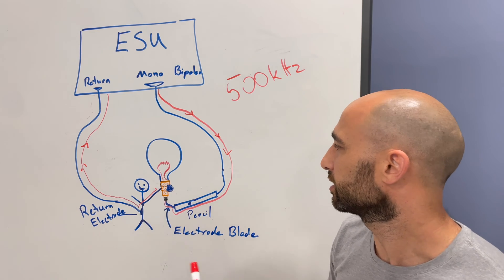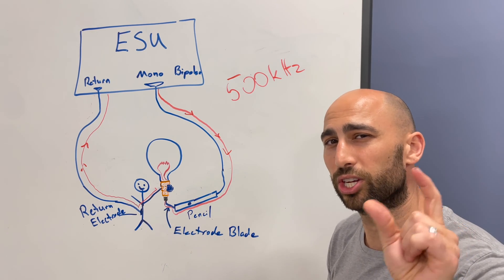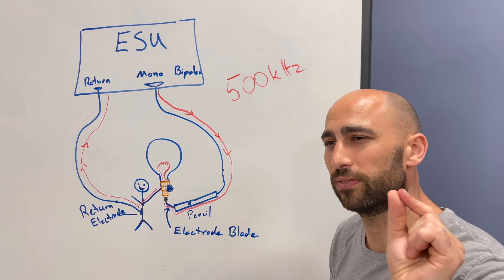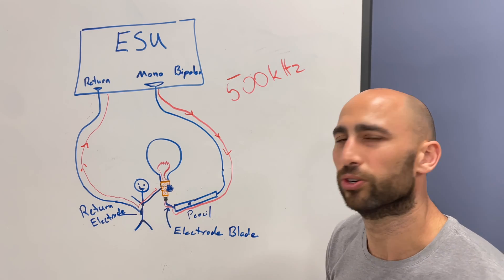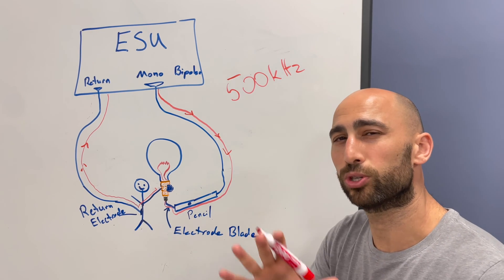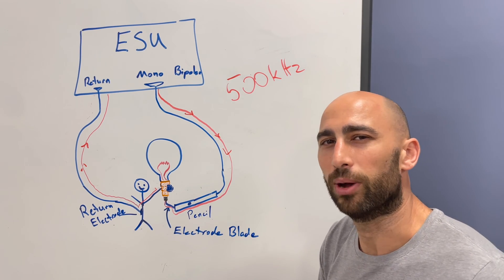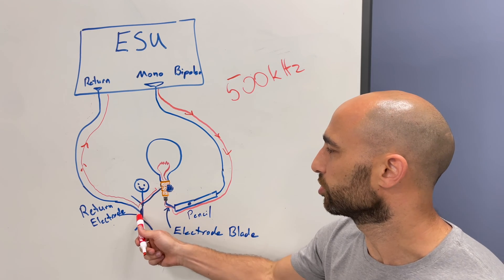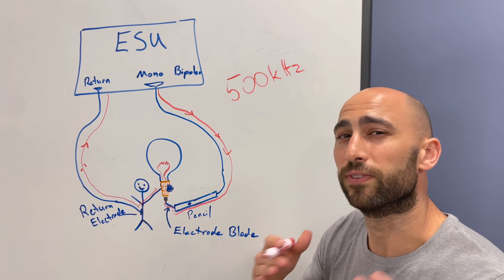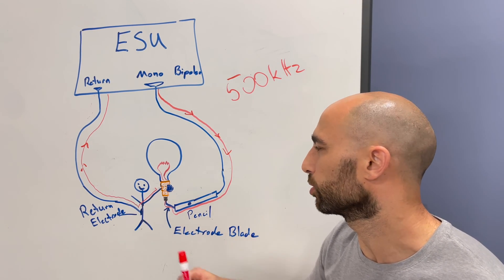The electrode is able to concentrate the current in a very specific area, whereas the return electrode is dispersing that current throughout the body. So if it's used properly, there's not any danger of getting burns.